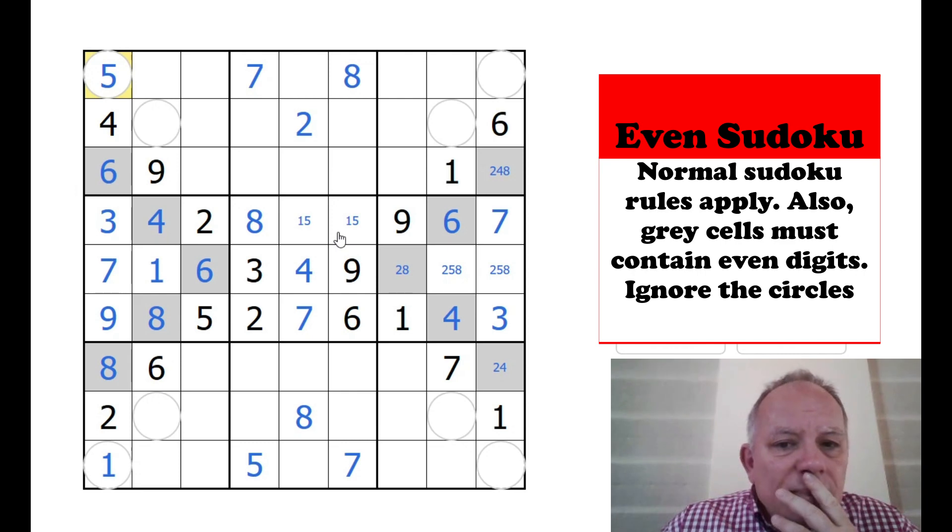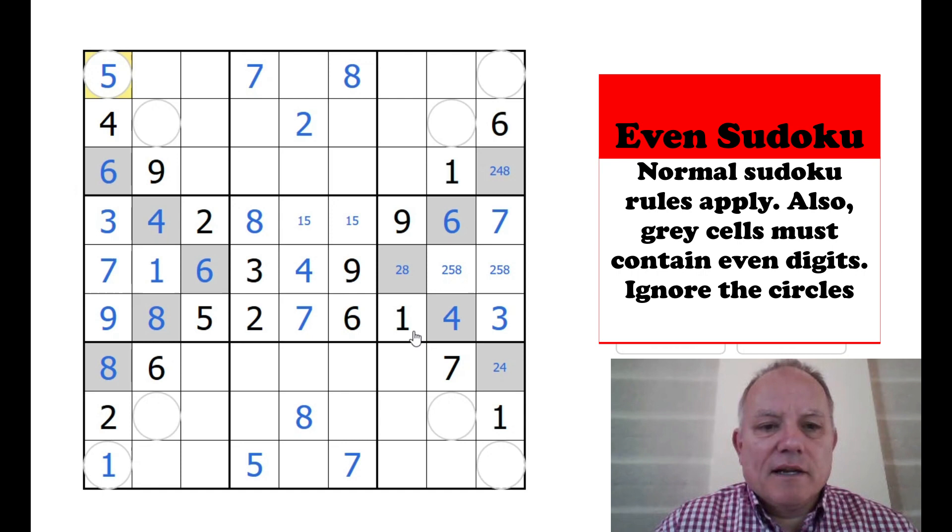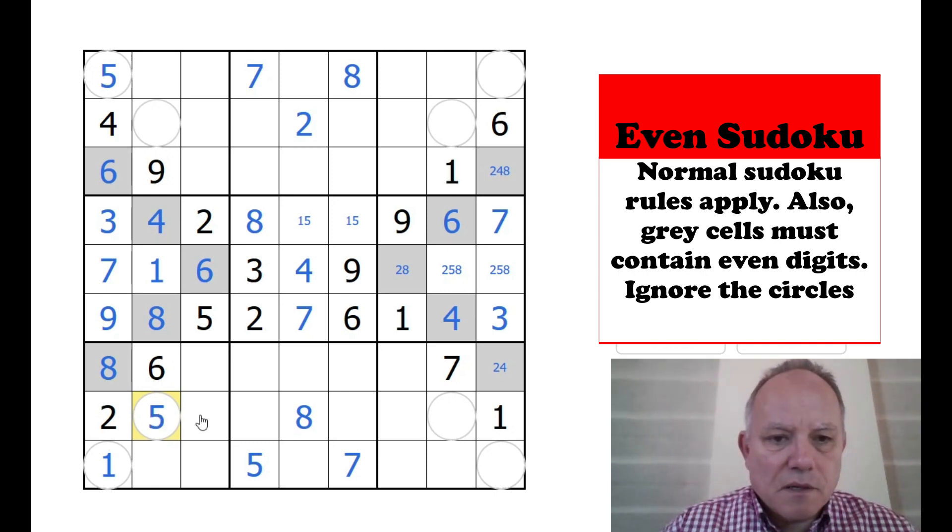Now we've got all these possibilities filled in the gray cells. We can effectively solve this as a regular classic now. Look five here is ruling out those cells. That five's ruling out that one. Five in this box must be in the circle. Two in this same column. Where can two go? Well, it can't go here because of that two or here because of that two. So it's here.